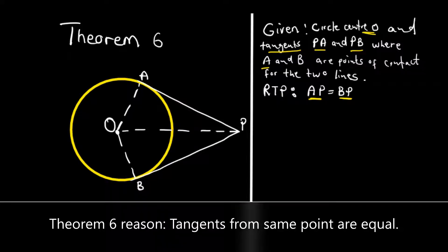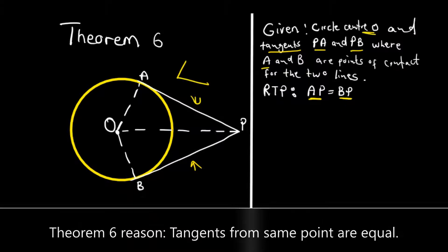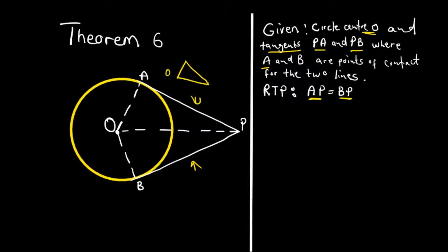We need to prove that this tangent here is equal to this tangent here. The first thing we're going to do is use congruency to prove these triangles. We have this triangle here, which is triangle OAP, and then we have this triangle which is triangle OBP. We're going to prove these triangles are congruent to each other.